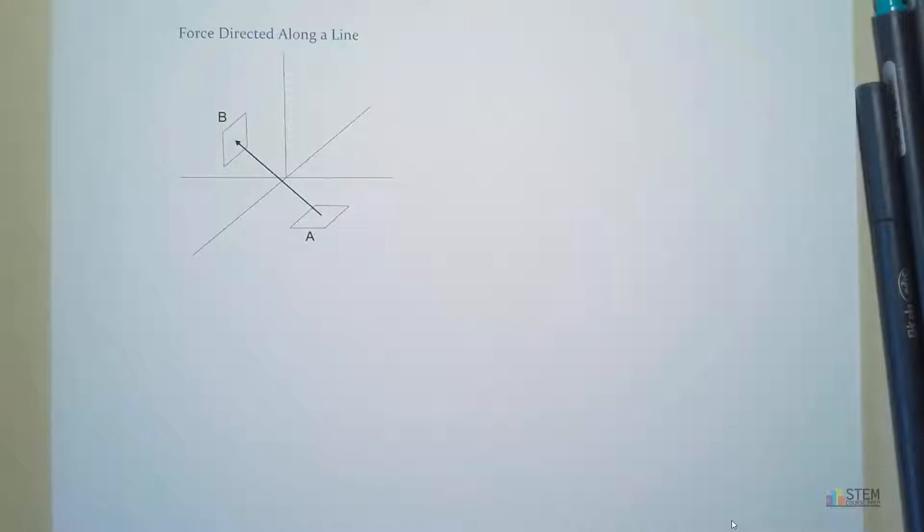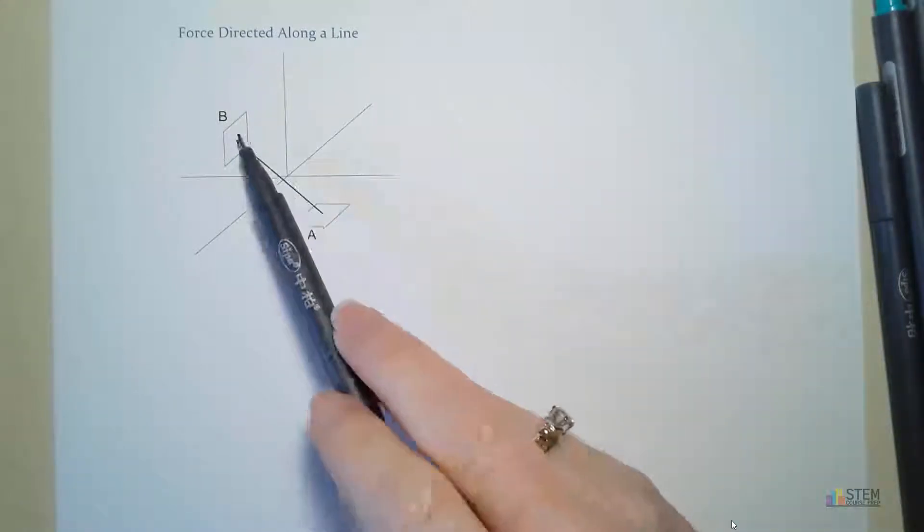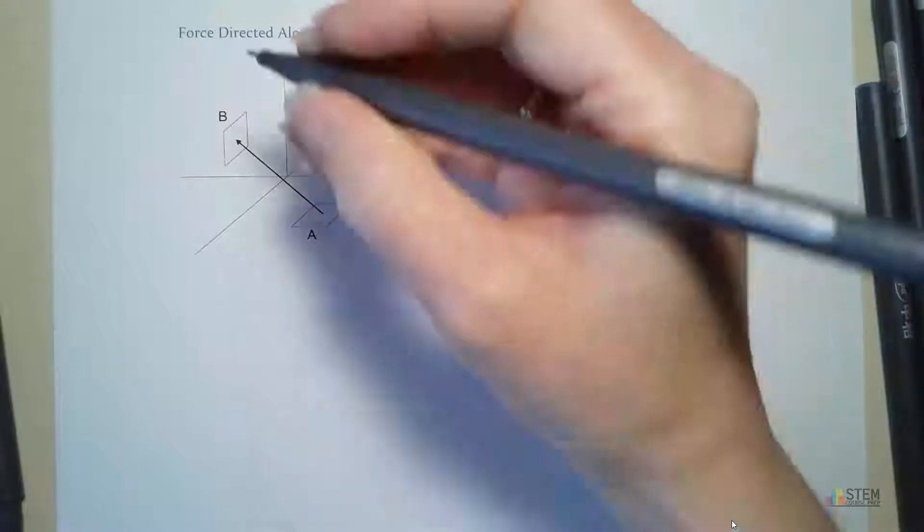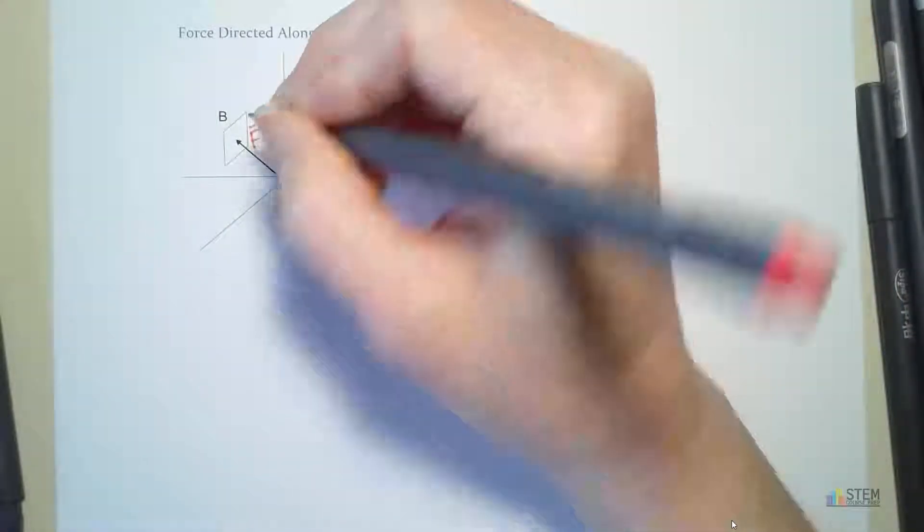So you'll see what we have here. We have this point A, and then we've got point B. This is a 3D problem. Now, we've got this vector drawn.